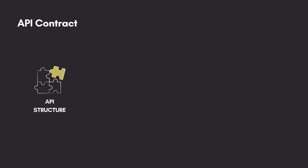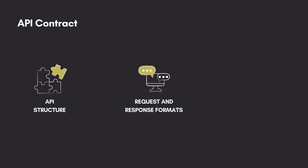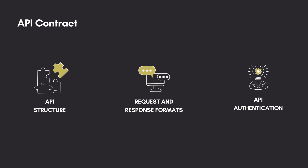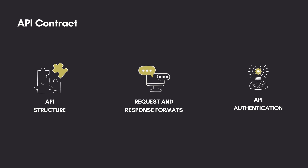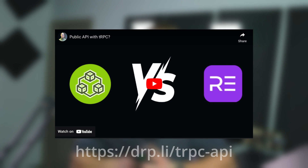The API contract describes the API structure, request and response formats, and how to authenticate your API calls, among others. For more information about API contracts, watch this video. Now that you have the OpenAPI specification, you can create an API route to return it in JSON format.